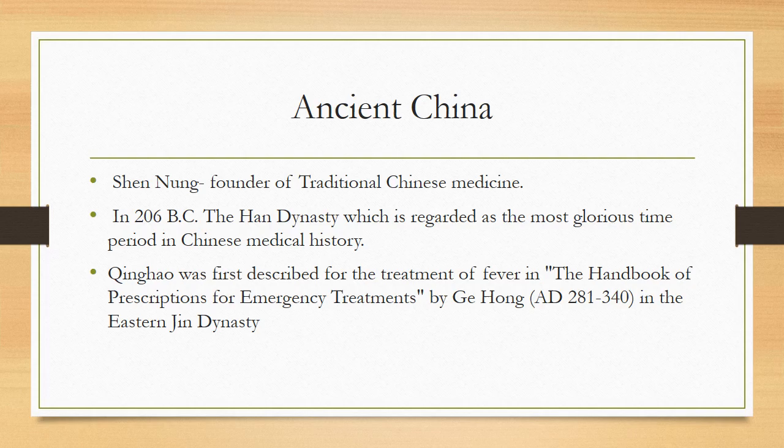In ancient China, Shen Nung is the founder of traditional Chinese medicine. In 200 BC, the Han dynasty was regarded as the most glorious time period in Chinese medical history. Qing Hao was first described for the treatment of fever in the Handbook of Prescriptions for Emergency Treatments by Ji Hong in the Eastern Jin dynasty.